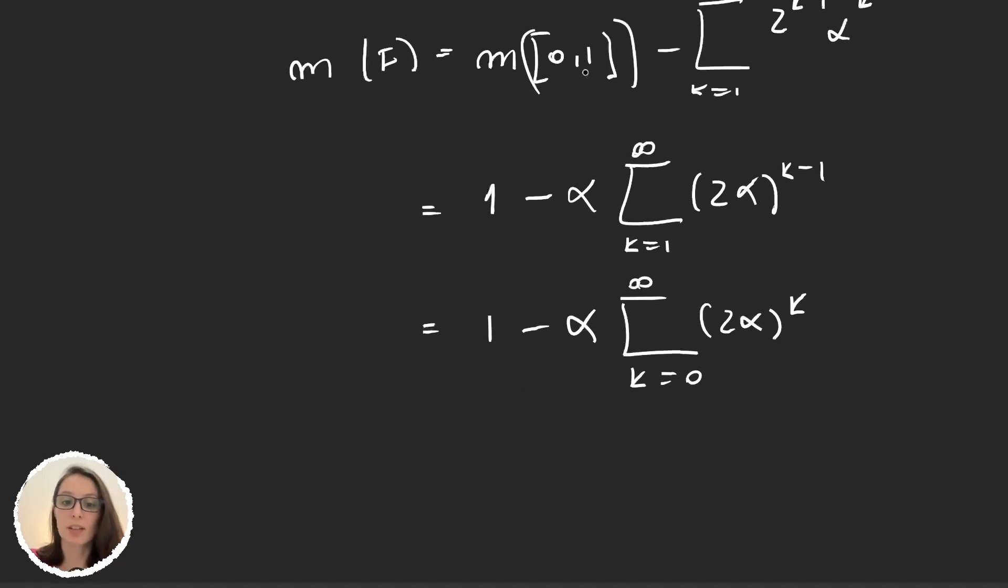And we can calculate what it converges to because it will be 1 minus... The limit of this series will be 1 over 1 minus the ratio, and the ratio is 2α.